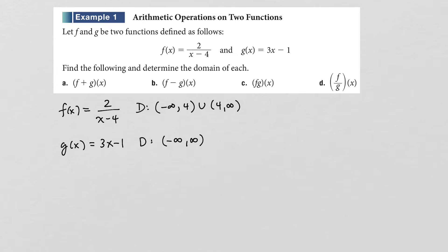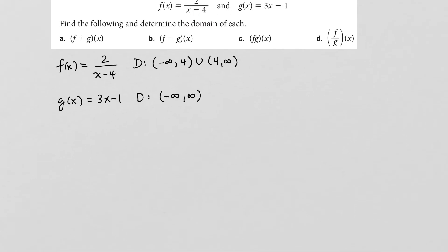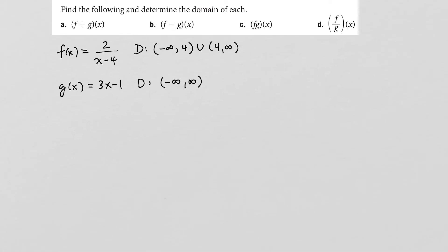When we're taking combinations of f(x) and g(x), we need to take values of x that belong to both domains. So no matter what happens with these functions, we cannot plug in the number 4, because we cannot plug 4 into f(x).